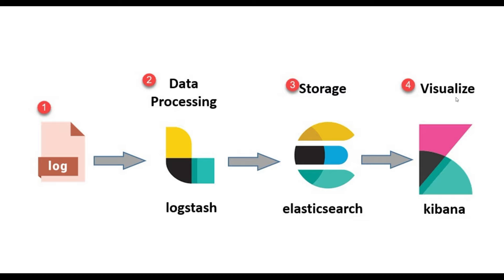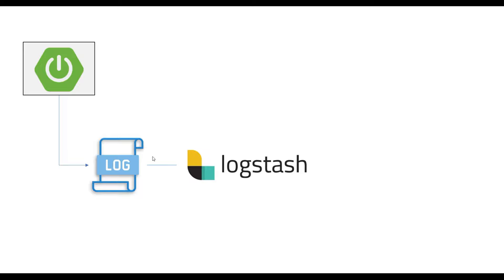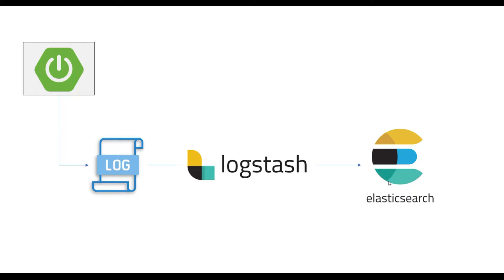In this tutorial we will create one Spring Boot project, generate a log file from that application, and give that log file to Logstash. I'll show you the configuration for that. Logstash will send the data to Elasticsearch, and I'll show how the data is stored in Elasticsearch NoSQL DB. Then we'll see how to view Spring Boot logs in the Kibana dashboard with all required configuration.